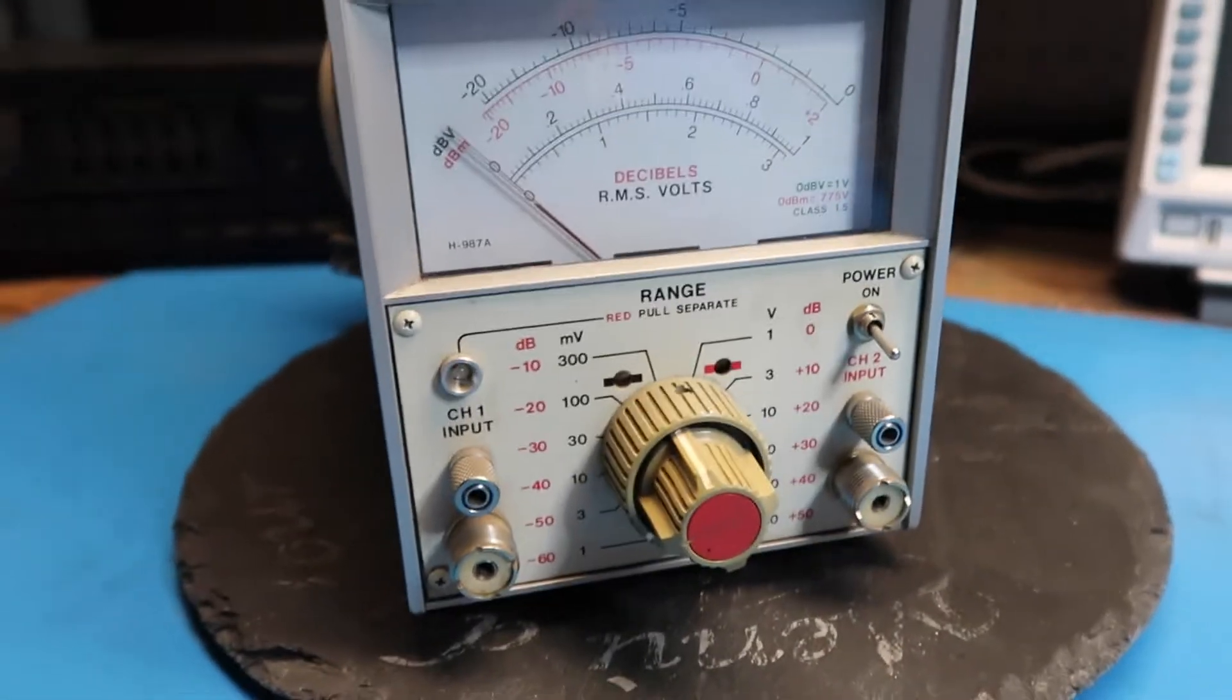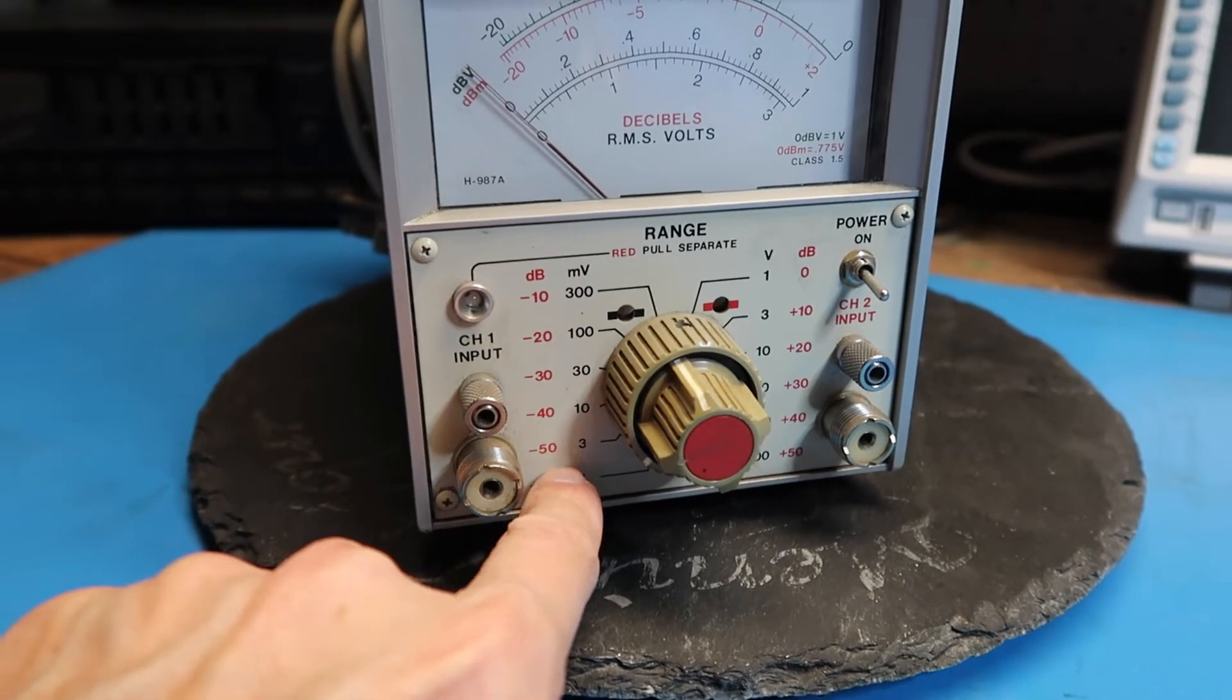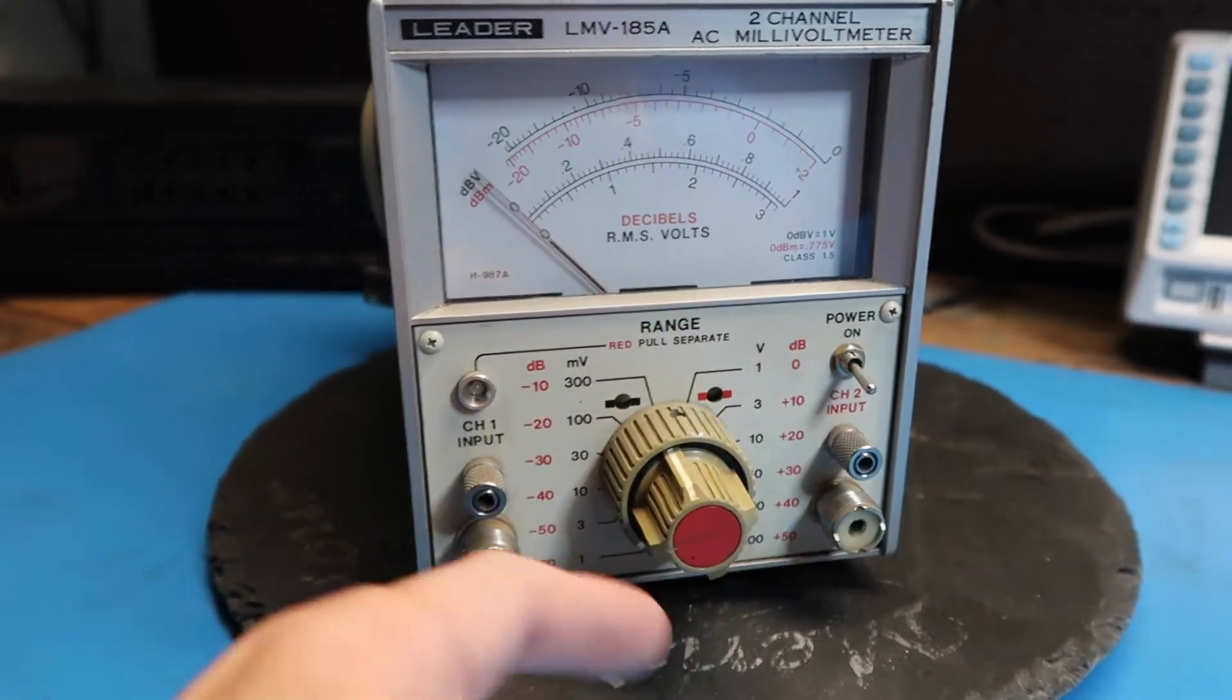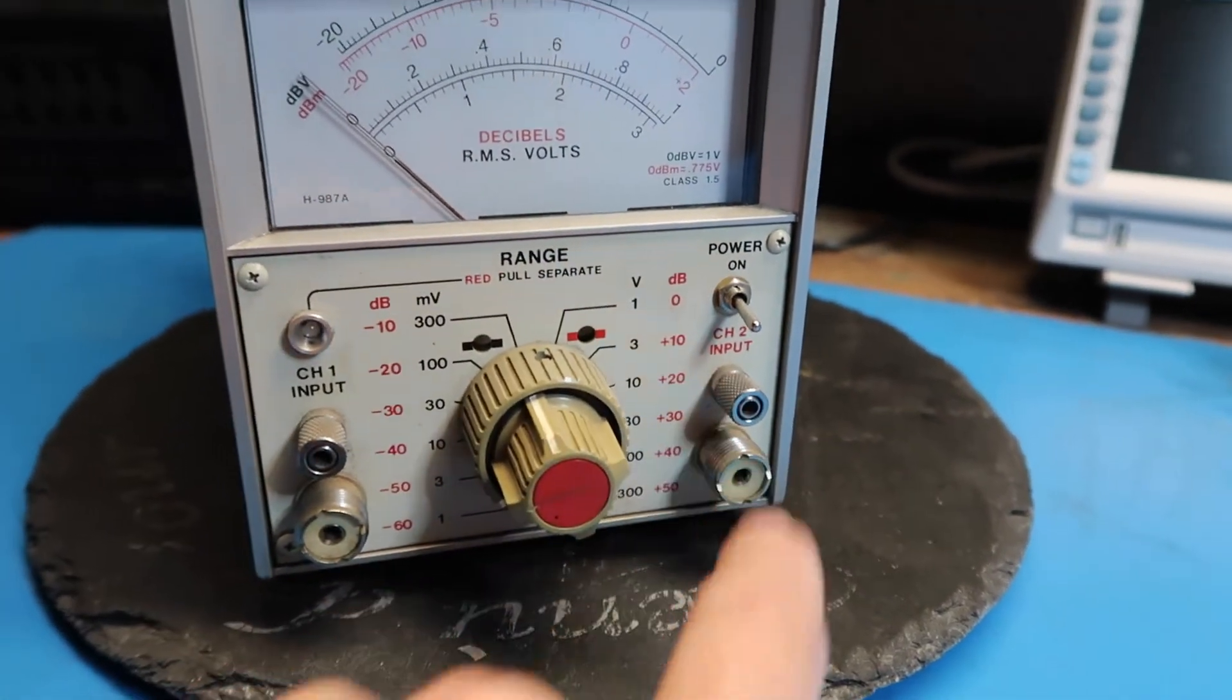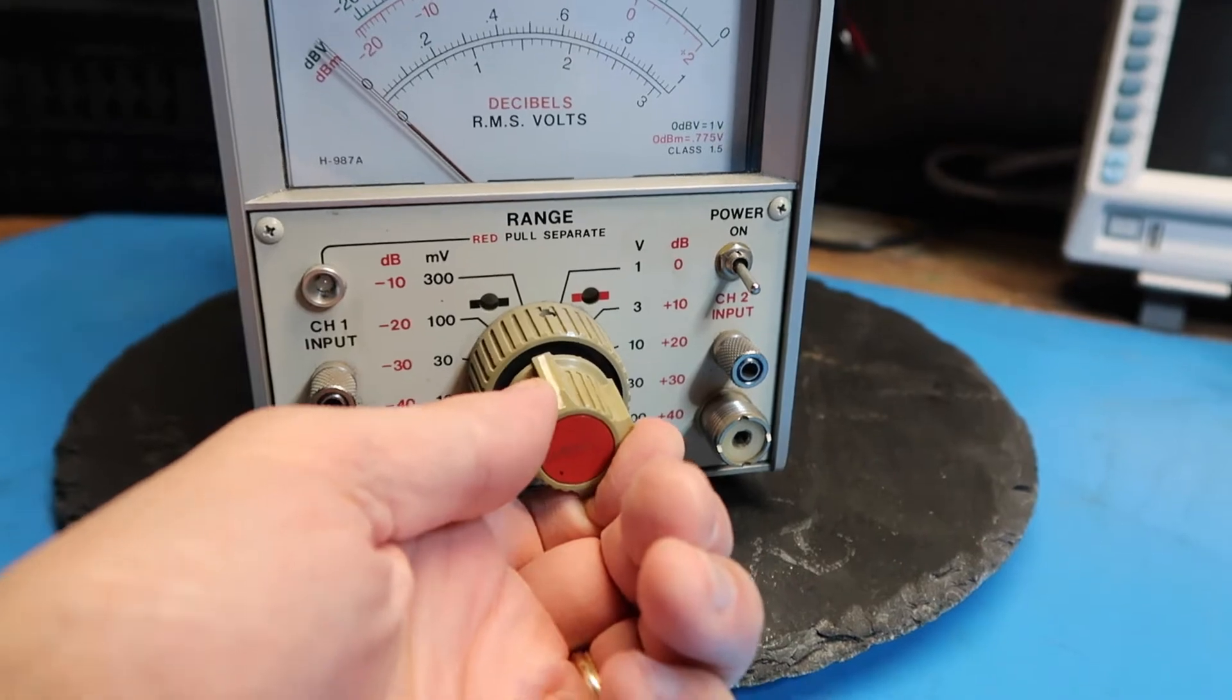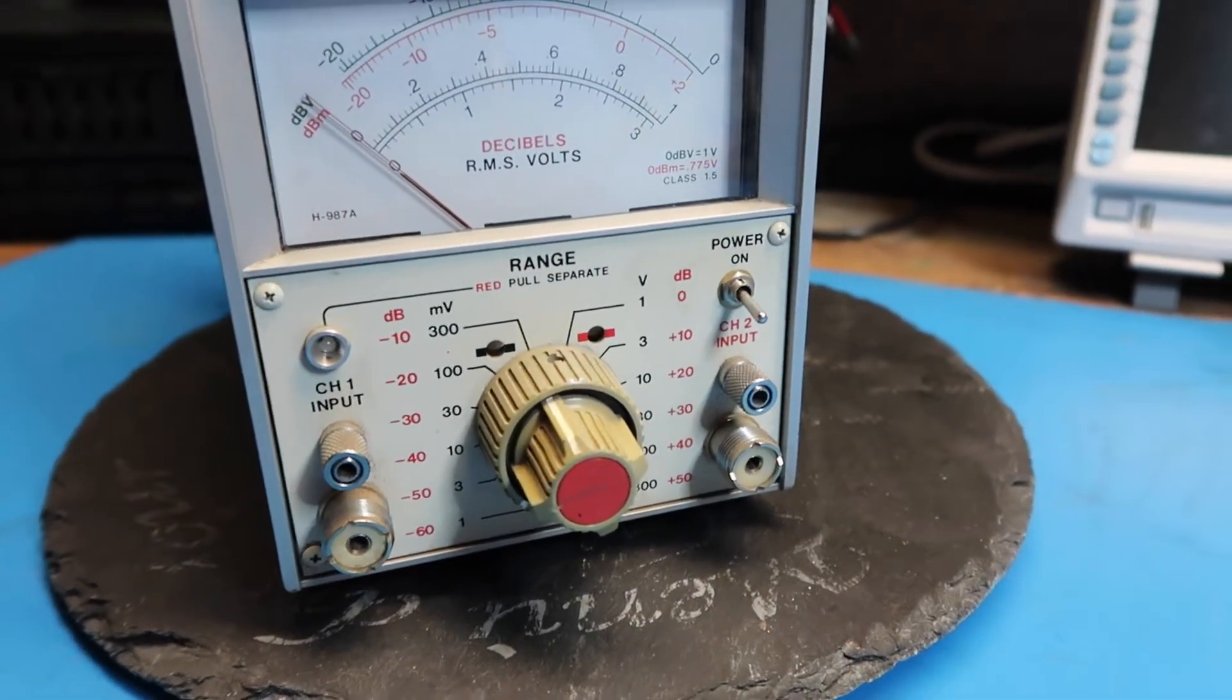Looking at the front we've got an analog voltmeter here. We've got scale ranges in terms of dB or millivolts. That's just a matter of what you read off of the meter scale. Power, range button, channel 1 input and channel 2 input. With this red pull separate, that's the center knob. With this center knob it looks like you can either gang the two together or use them separately.